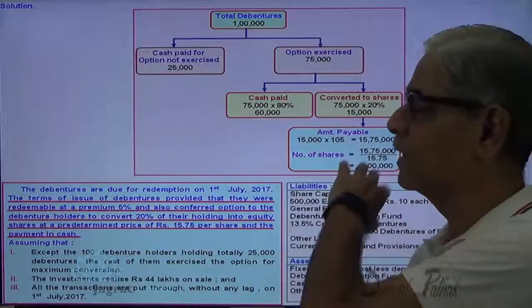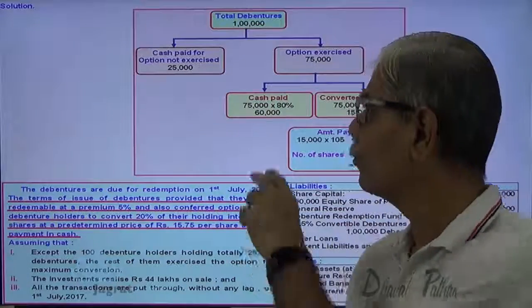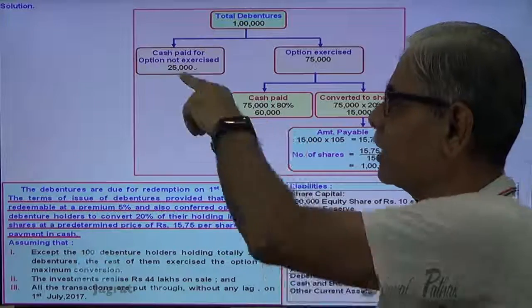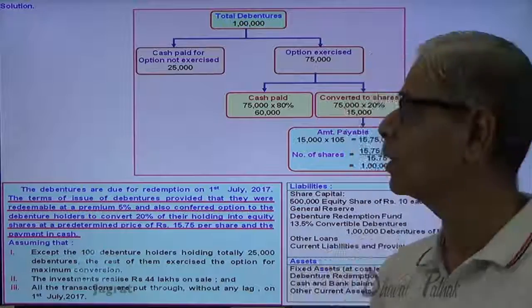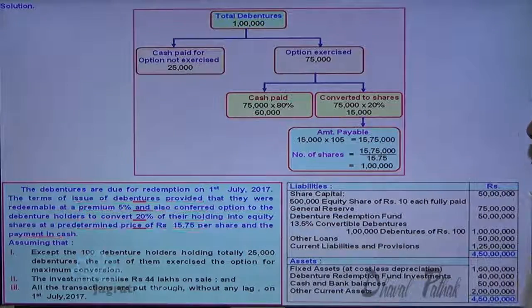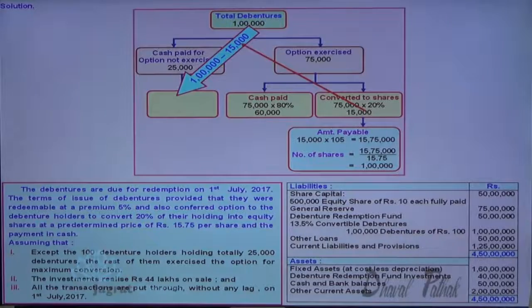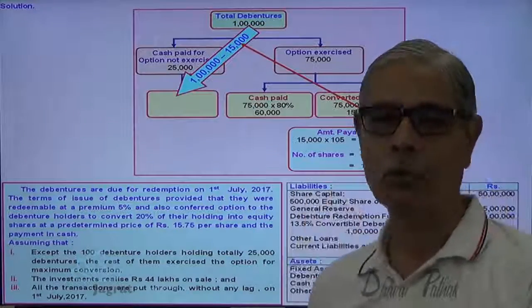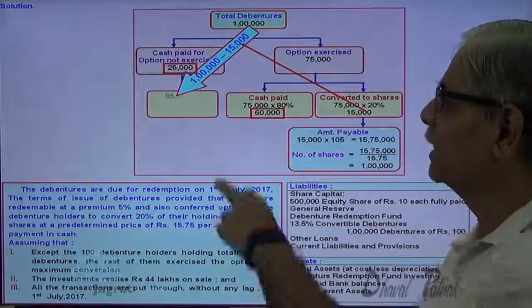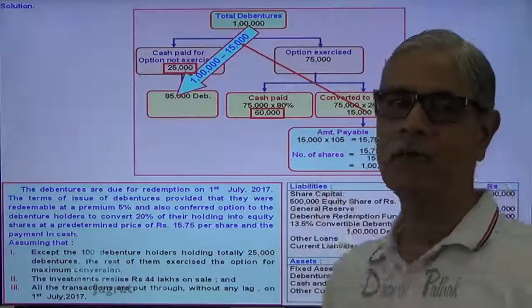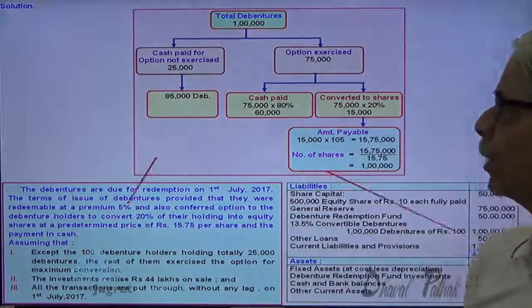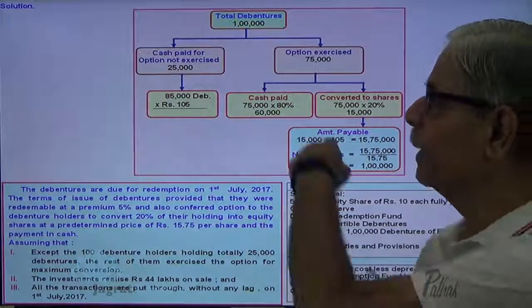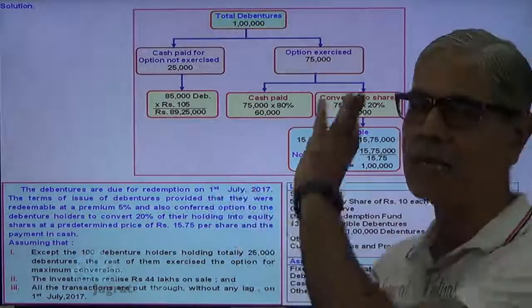So 1 lakh equity shares are given in conversion. Cash is paid for the 60,000 debenture holders (75,000 × 80%) and the 25,000 debenture holders who did not exercise the option — both groups are paid in cash. Total debentures paid in cash: 25,000 + 60,000 = 85,000 debentures, paid at ₹105 per debenture (including 5% redemption premium). So 85,000 × ₹105 is the amount paid in cash.